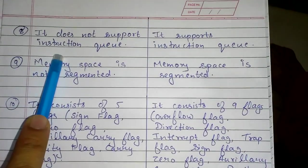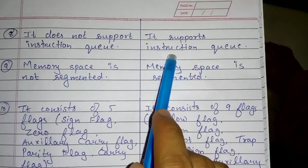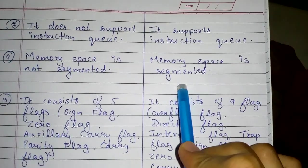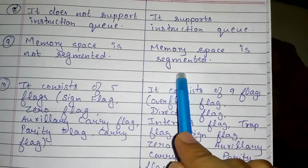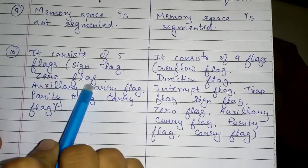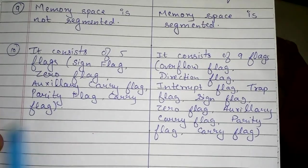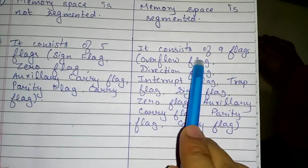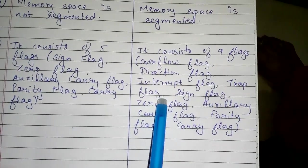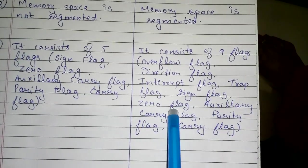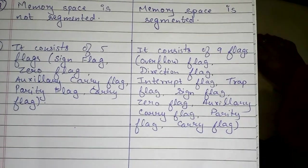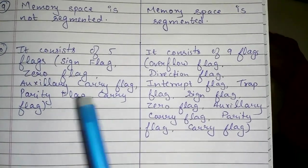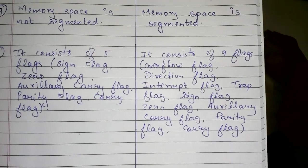The 8085 does not support an instruction queue, but the 8086 does. Memory space in the 8085 is not segmented, while the 8086 has segmented memory space. The 8085 has five flags: sign flag, zero flag, auxiliary carry flag, parity flag, and carry flag. The 8086 has nine flags: overflow flag, direction flag, interrupt flag, trap flag, plus the same five as the 8085. Topics like flags, segmentation, and pipelining will be covered in further videos.